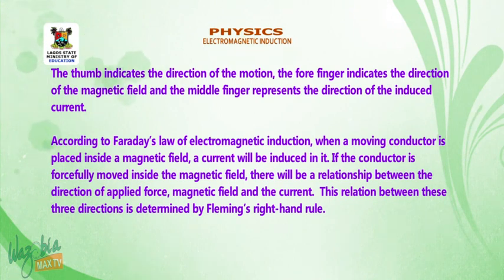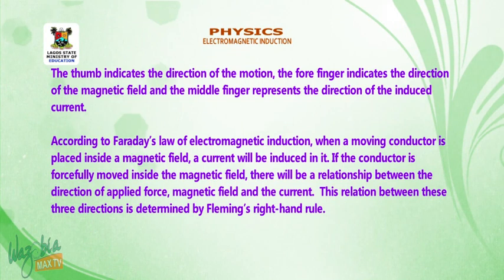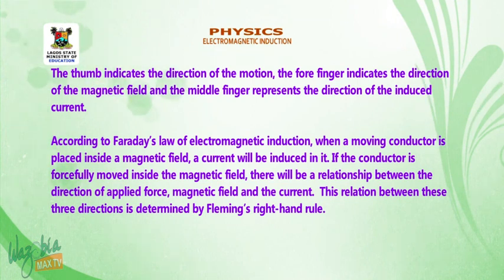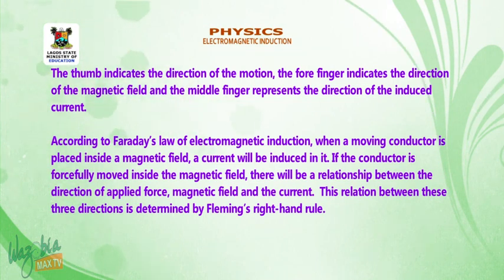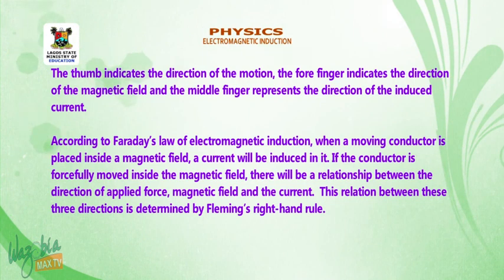According to Faraday's law of electromagnetic induction, when a moving conductor is placed inside the magnetic field, a current will be induced in it. If the conductor is forcefully moved inside the magnetic field, there will be a relationship between the direction of the applied force, magnetic field, and the current. This relationship between these three directions is determined by Fleming's right-hand rule.